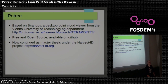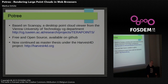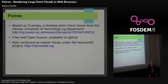Some background information: everything started at the Vienna University of Technology. They developed ScannerB, a desktop point cloud viewer which could display large amounts of point cloud data and also edit them. The idea of Potree was to do the same for web browsers. The source code is now open source and freely available on GitHub. Currently I'm continuing to work on it as a master thesis project at the Vienna University of Technology together with the Harvest4D project.